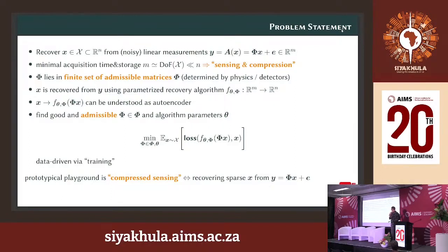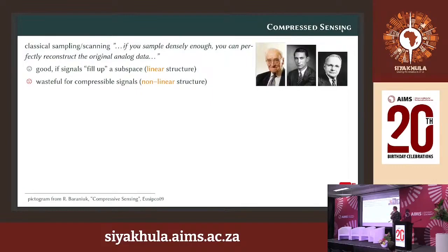A typical playground for this is compressed sensing, which we understand very well. Compressed sensing is the recovery of sparse vectors from linear observations in the presence of noise. Engineers learn a classical sampling paradigm: if you sample a signal densely enough, you can perfectly reconstruct the original data — due to Kotelnikov, Shannon, and Nyquist. This is a good idea if all signals fill up a subspace with linear structure. But sparsity is a non-linear structure; these signals are compressible and far from noise, making dense sampling wasteful.